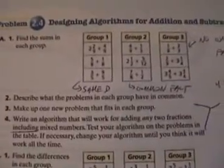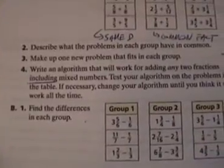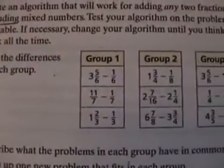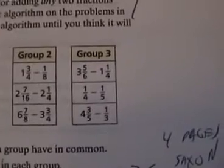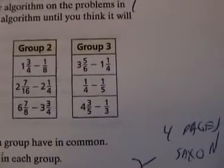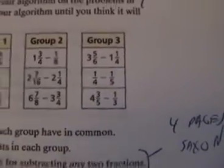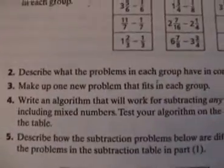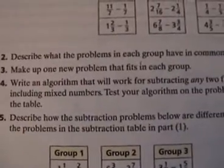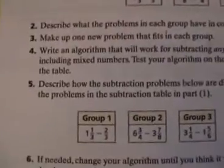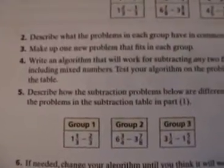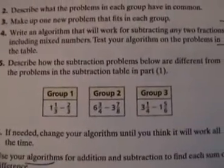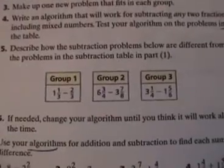So that's addition. Now you find the differences in each group — same denominator, different denominators, and denominators that either don't have a common factor or aren't very good. Describe what the problems in these groups have in common. Make up one new problem that fits each group. Write an algorithm that will work for subtracting any two fractions, including mixed numbers. Test your algorithm on the problems in the table. Describe what the problems are different from the problems in the other table, part one.